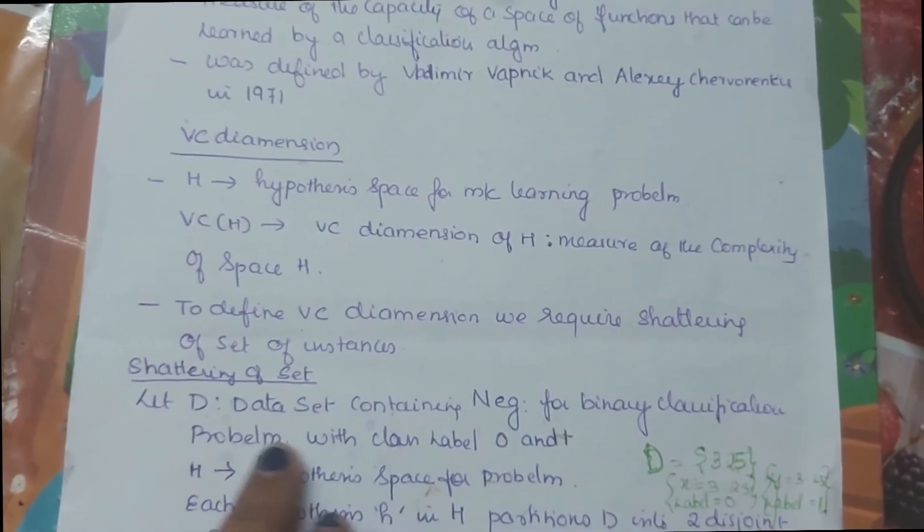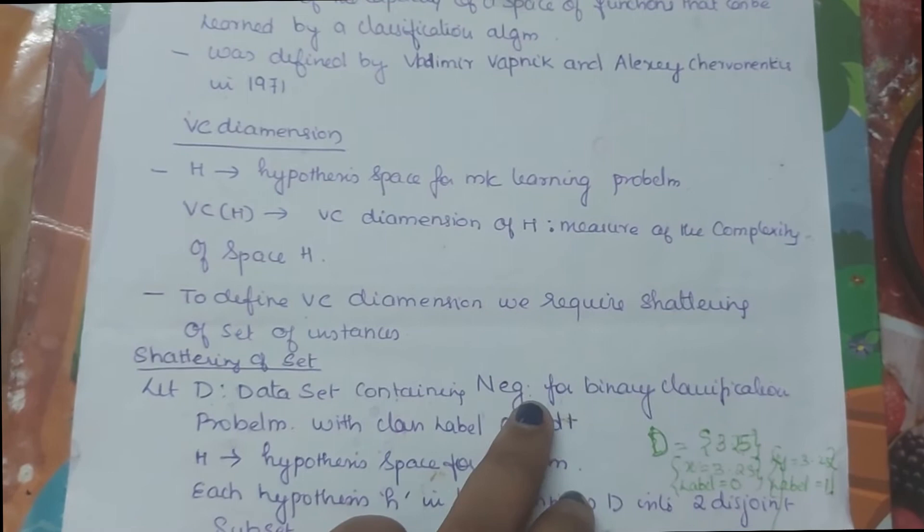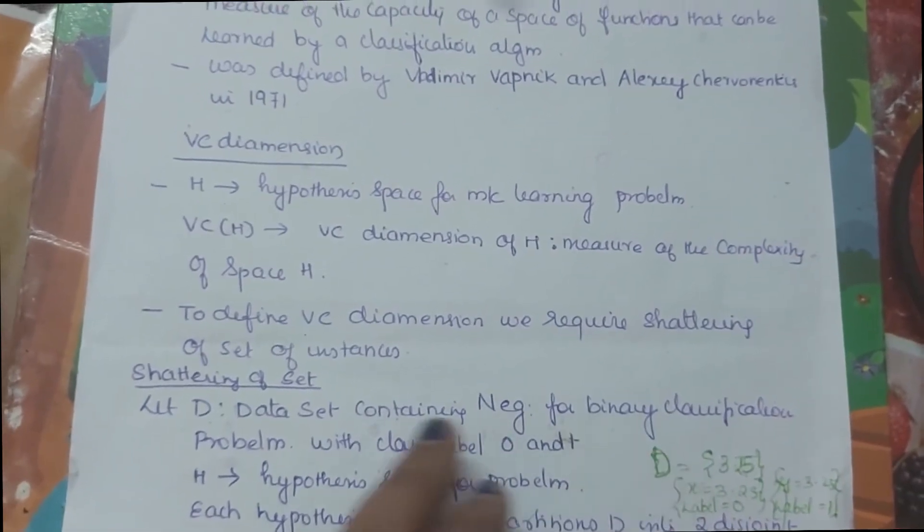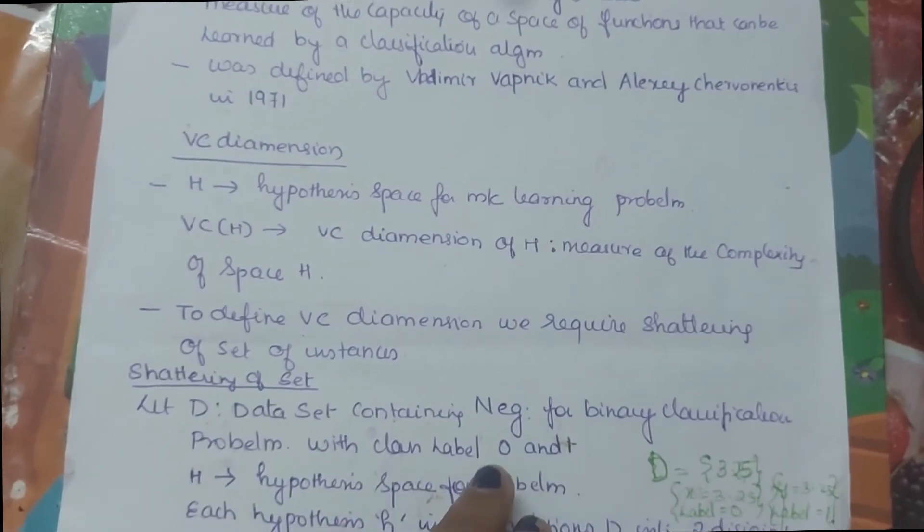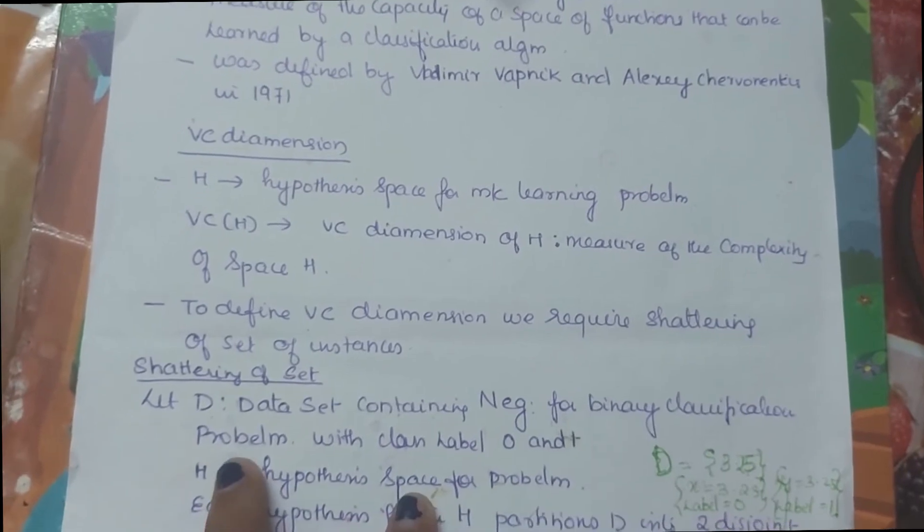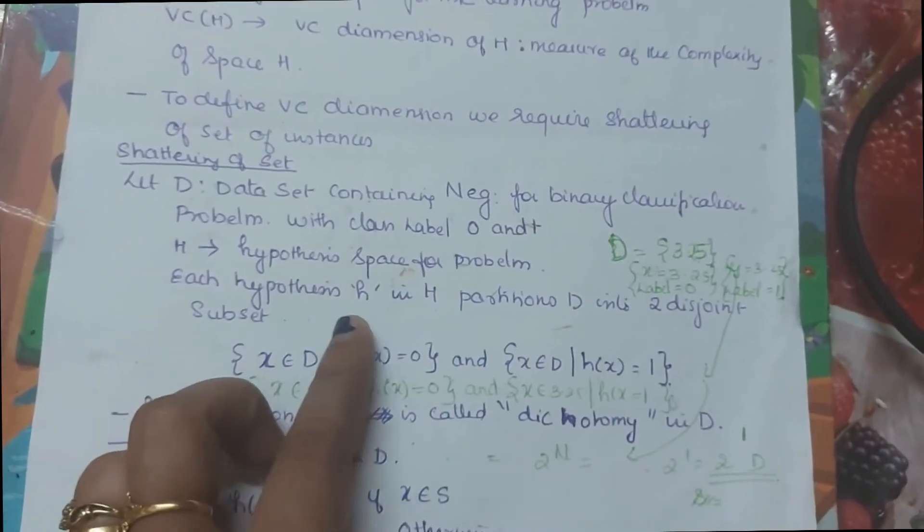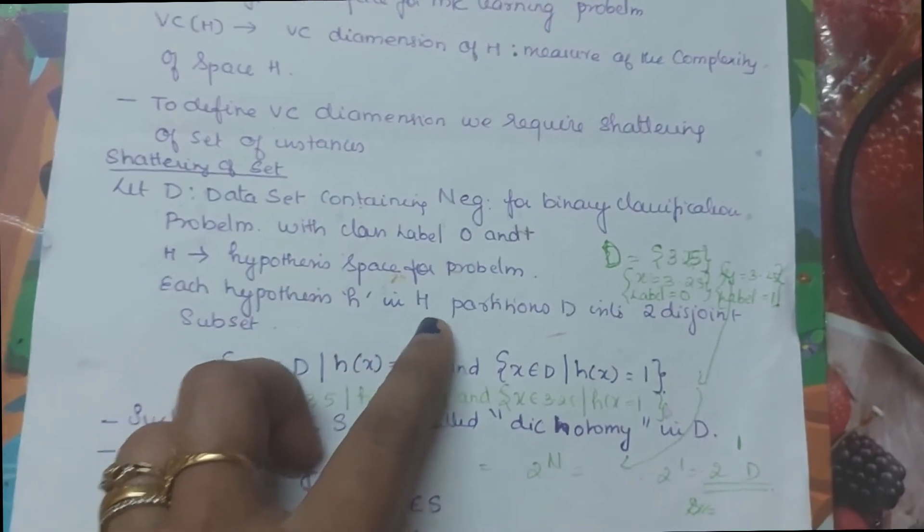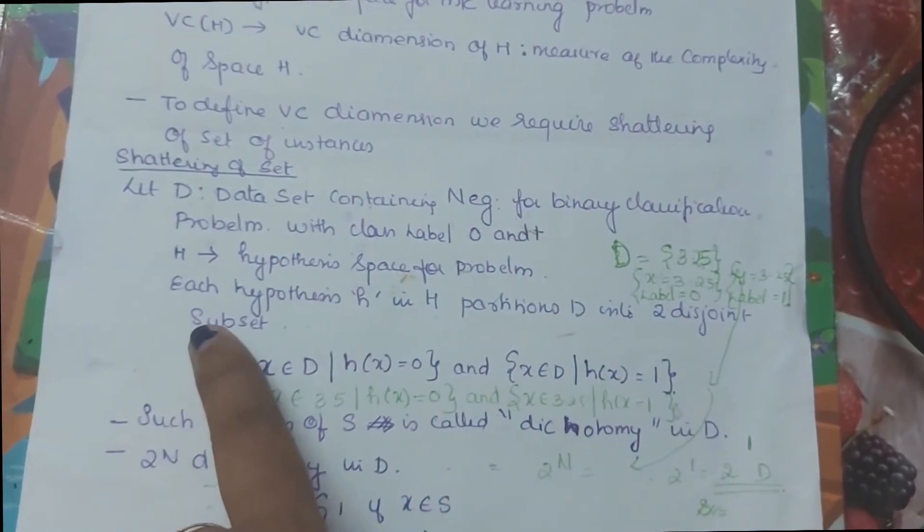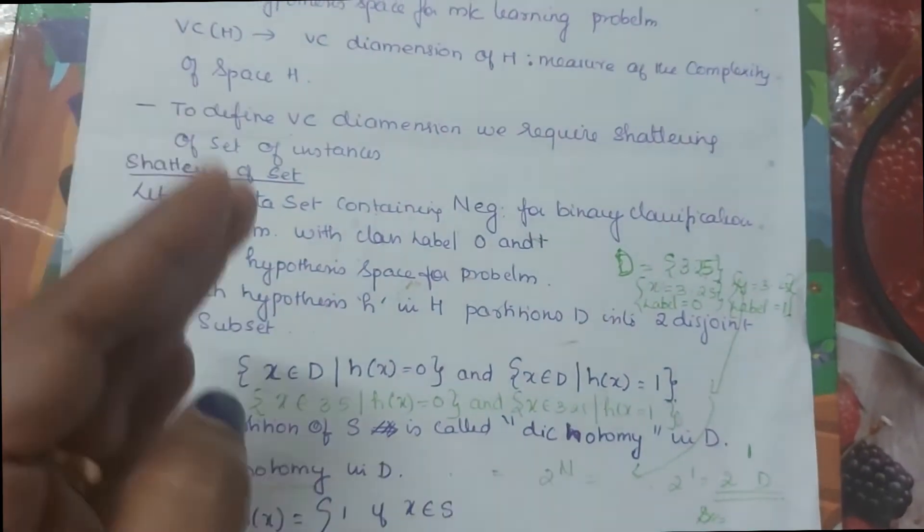So let D be the data set containing N examples for a binary classification problem with class 0's and 1's. And capital letter H is a Hypothesis Space.